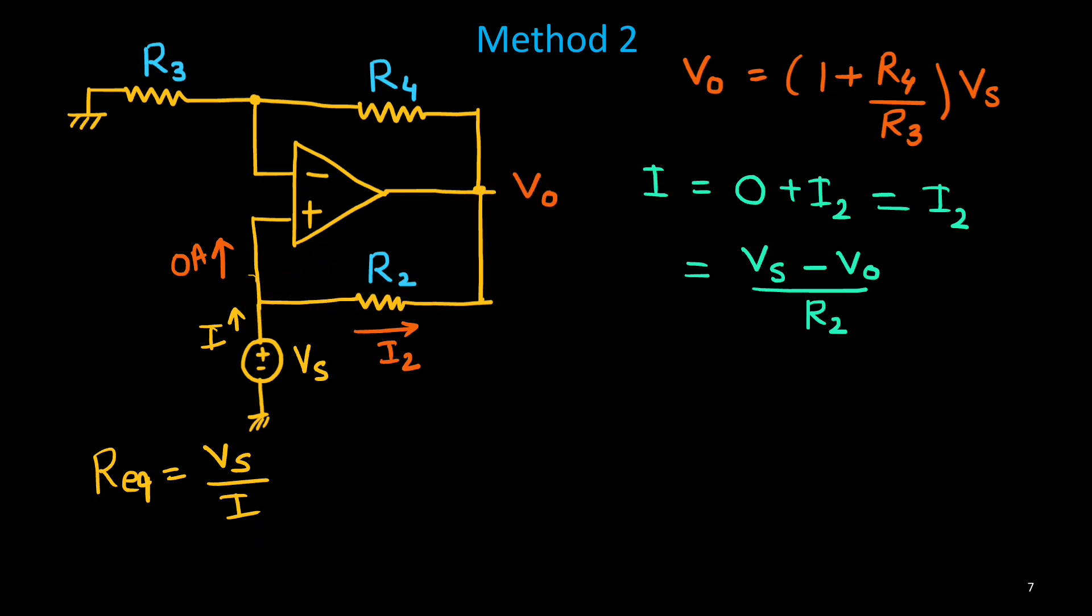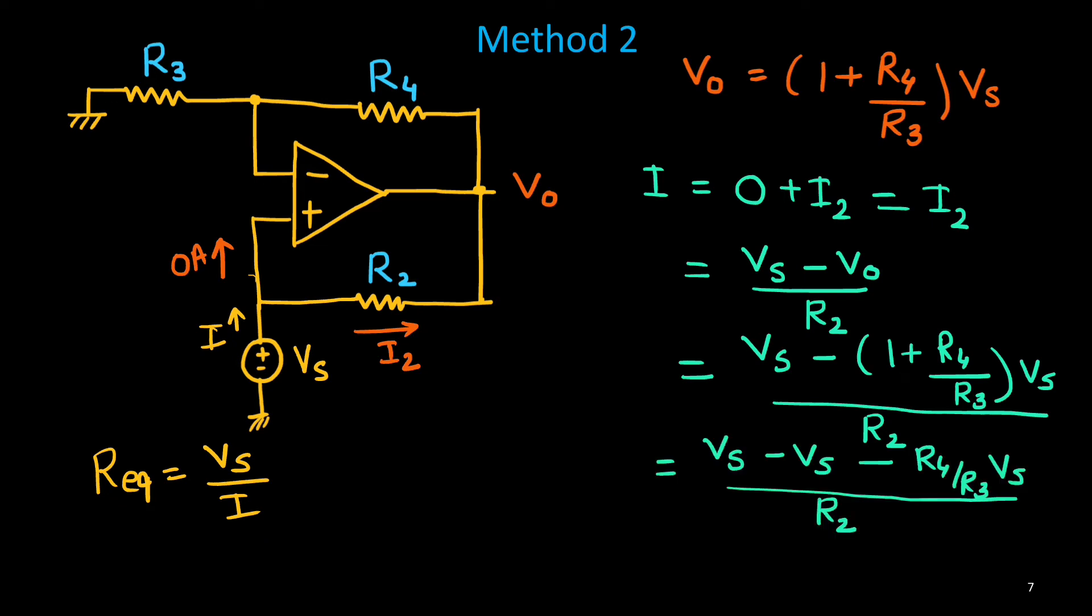Now, we can replace this V0 by 1 plus R4 by R3 times Vs. Then, if you simplify it, you will see Vs minus Vs minus that term. So, this Vs minus Vs will cancel each other. Then, if you simplify it, you will get minus R4 upon R2 times R3 times Vs here.